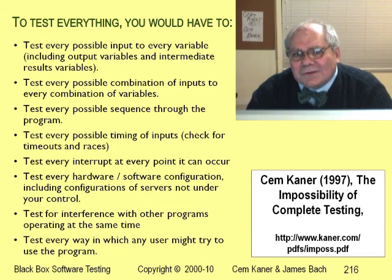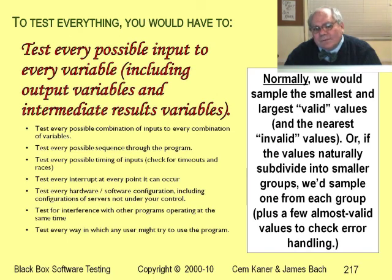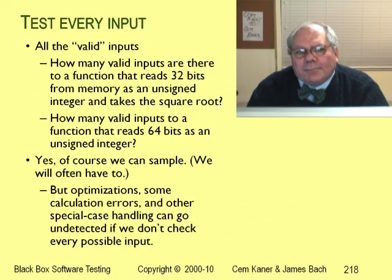That's a lot of tests. Let's get started by looking at individual variables. The usual approach is to test variables with a few values — we should check normal operation and we should check error handling. So we give it some values that the program should accept and process normally, and we give it some values that are too big, too small, too strange. Maybe we try a few special cases as well. In preparing for this lecture, you probably analyzed a function that reads a 32-bit word from memory, interprets it as an unsigned integer, and reports its square root.